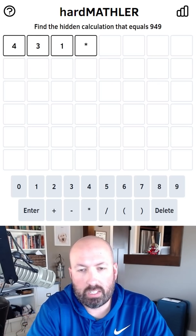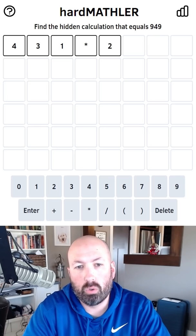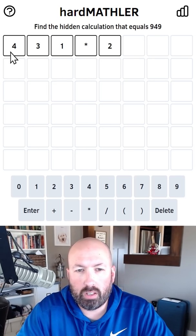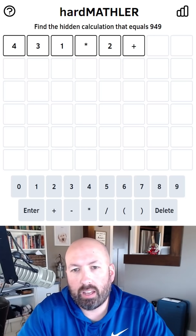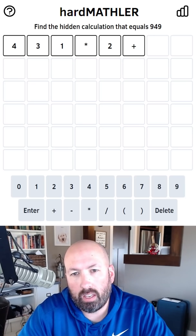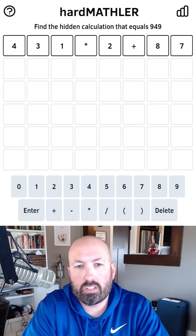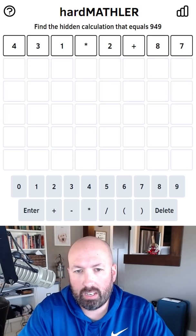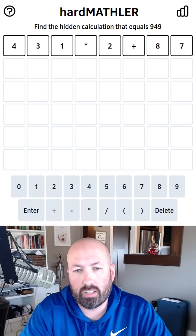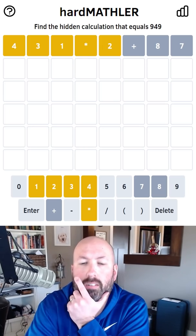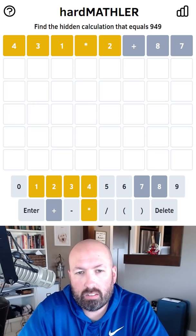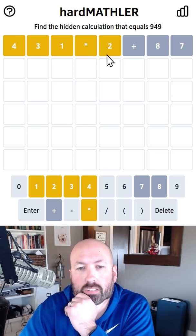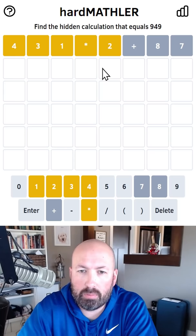Okay, what if we did 431 times 2? That's going to let us use 1, 2, 3, and 4. That would be 862, so then we can add, what would it be, 87. I think that's going to let us check 1, 2, 3, 4, 7, and 8 and multiplication and addition. That seems like a good start.